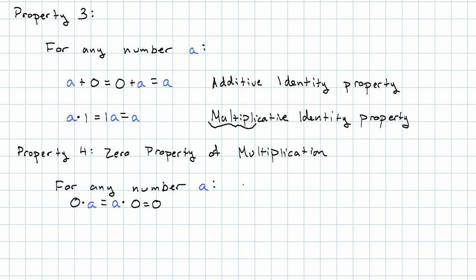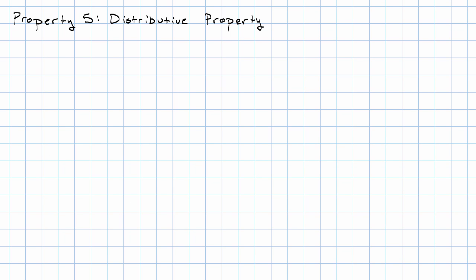The last property, however, is a little bit complicated. Property five is called the distributive property. And it tells us what happens when we mix addition and multiplication. It says, for any three numbers A, B, and C, well, two things.